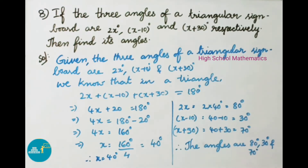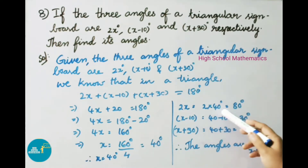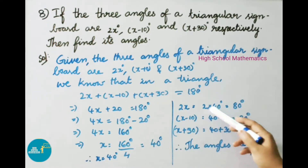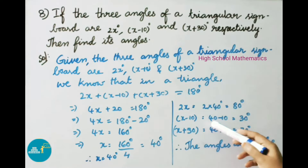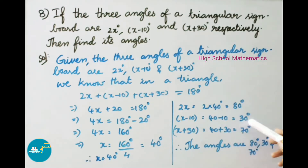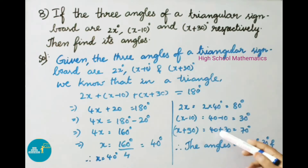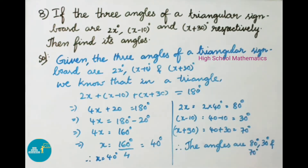Now let us find the three angles. 2x equals 2 into 40, that is 80 degrees. Next, x minus 10 equals 40 minus 10, that is 30 degrees. Next, x plus 30 equals 40 plus 30, that is 70 degrees. Therefore the angles are 80 degrees, 30 degrees, and 70 degrees.